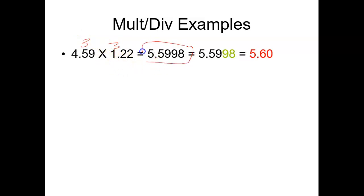When we multiply it, we end up with this answer here. However, we need to round it because there's only three significant digits here, three here, so we want our answer in three significant digits.